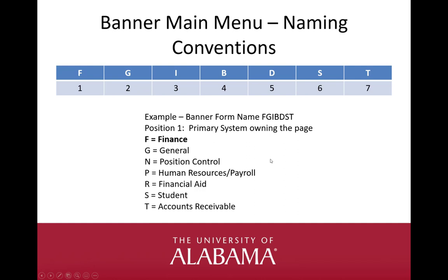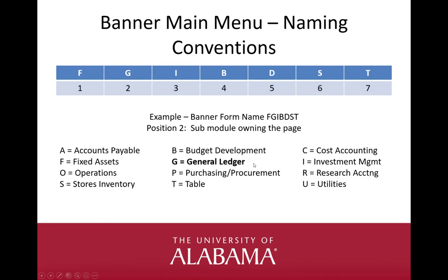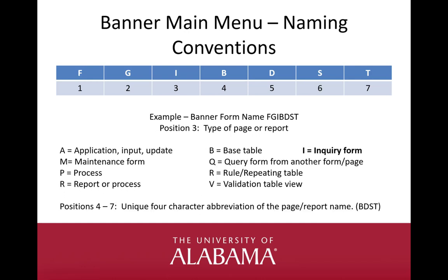The page names are written in acronym form and actually do have meaning. For example, page FGIBDST — sometimes referred to as BDST — stands for Finance General Inquiry Budget Status. The first character represents the primary system or module, in this case Finance. The second character represents the sub-module, in this case G for General Ledger. The third character represents the type of page or report — I equals Inquiry Form. Finally, positions 4 through 7 make up a unique four-character abbreviation of the page or report, in our case Budget Status.